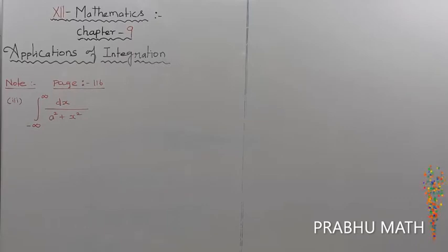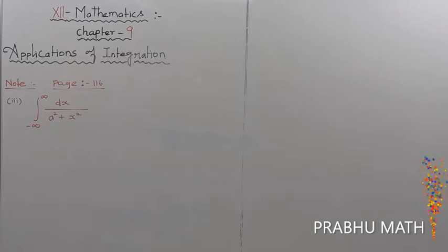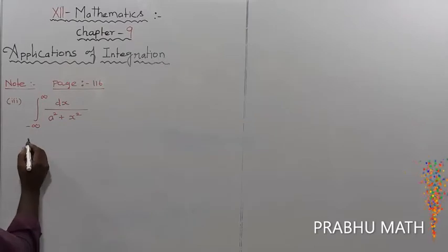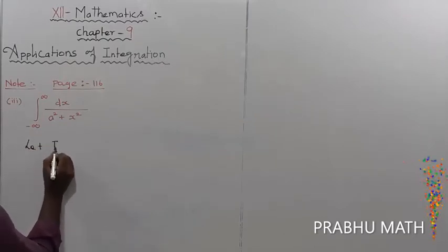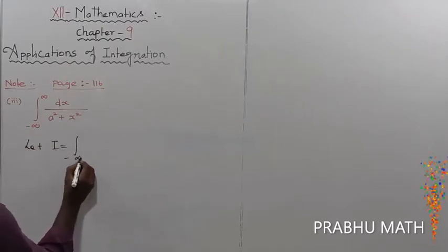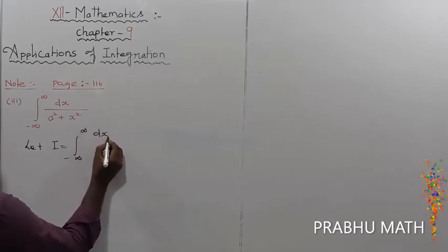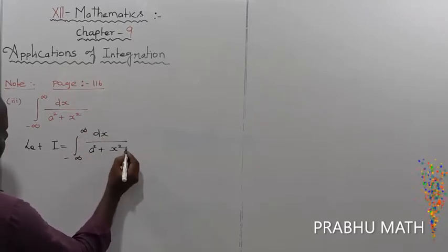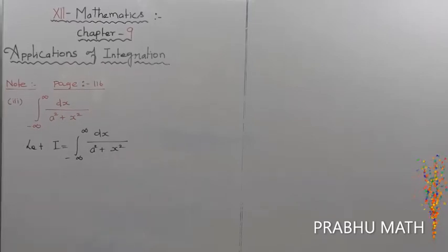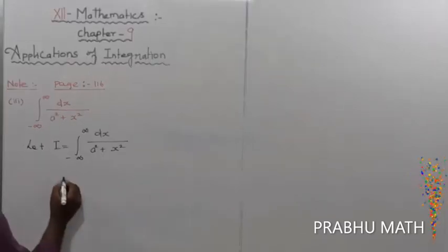Note number 1, page number 116, third subdivision. Let us consider the improper integral that is equal to integral of minus infinity to plus infinity of dx divided by a squared plus x squared.